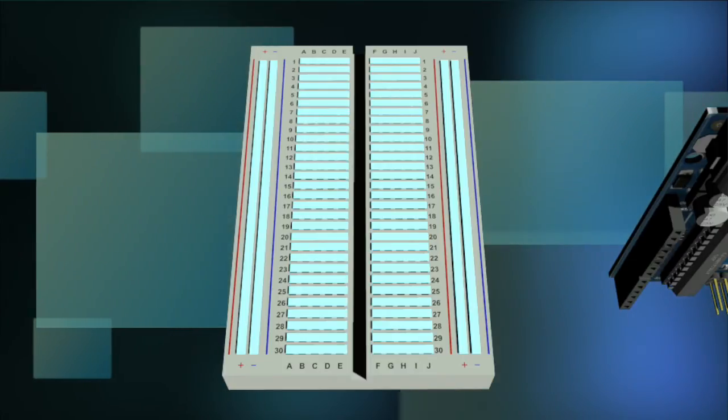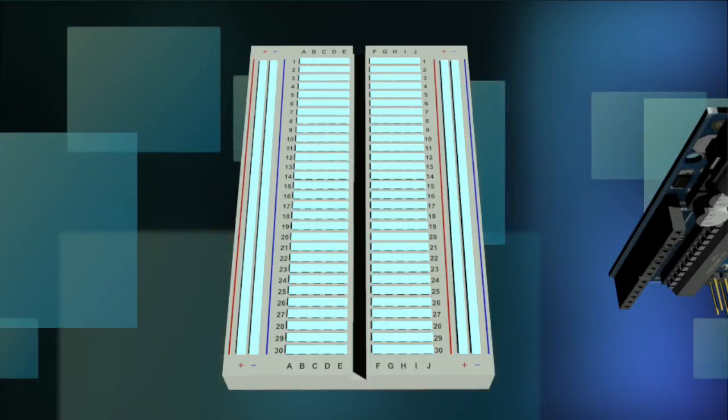These strips are usually used for power and ground connections. The middle row breaks the connection between the two sides of the board.